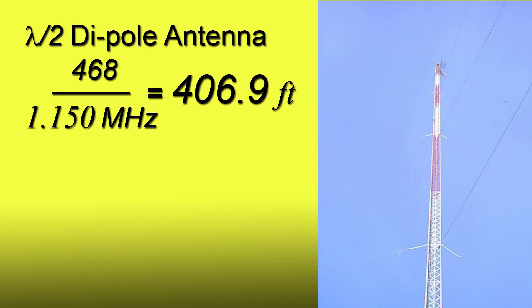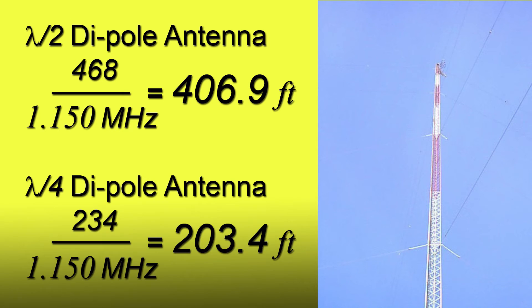Let's do some more deep diving. For example, if you like listening to your neighborhood AM station at 1150 kilohertz — that's 1.150 megahertz — let's see how big their antenna has to be. A half-wave would be 406.9 feet, and a quarter-wave would need to be 203.4 feet.